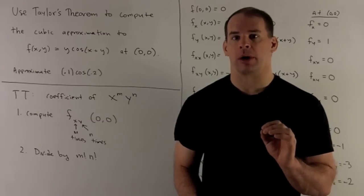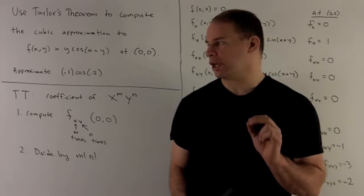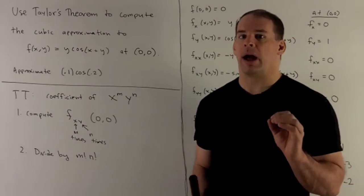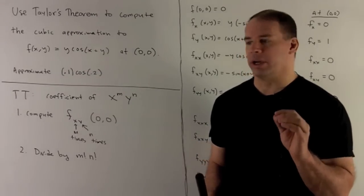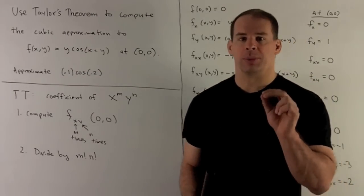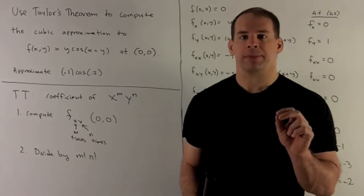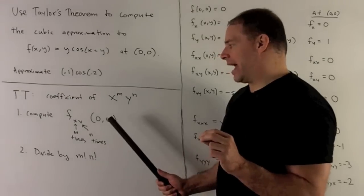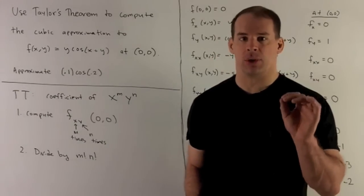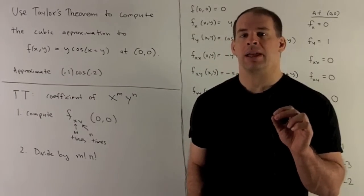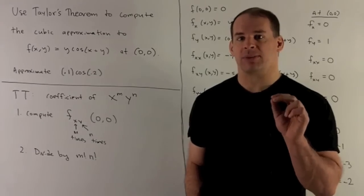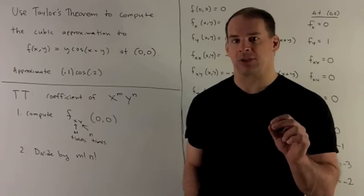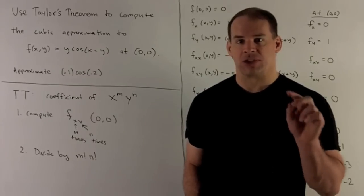So how does Taylor's Theorem work? We're looking for the coefficient of x^m * y^n in some Taylor polynomial. What do I want to do? First, we compute partial derivative. It's going to be m times in x, n times in y, and then I'm going to evaluate at our point (0,0). Next, we take the number that comes out of that, divide by m factorial times n factorial. That's going to give us our coefficient.